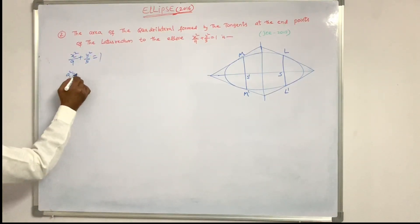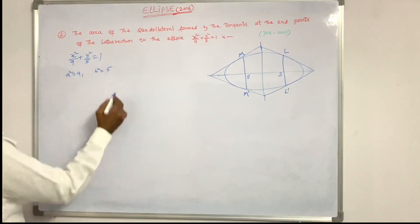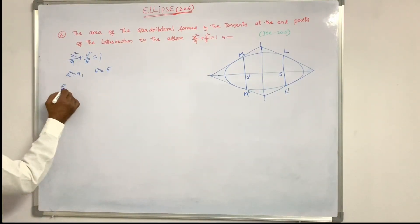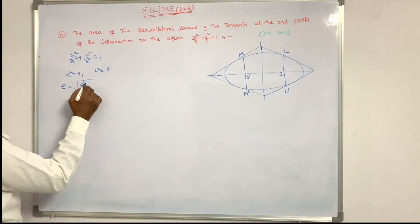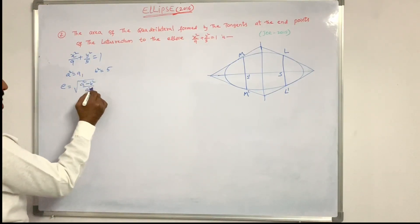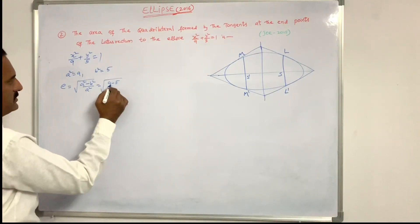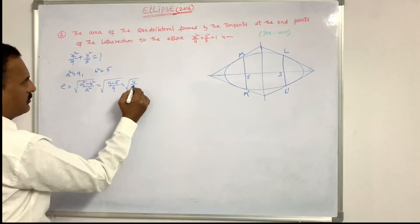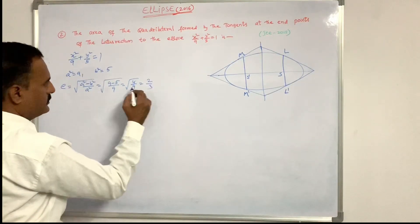Therefore A² = 9 and B² = 5. First we find eccentricity: e = √((A² − B²)/A²) = √((9 − 5)/9) = √(4/9) = 2/3.